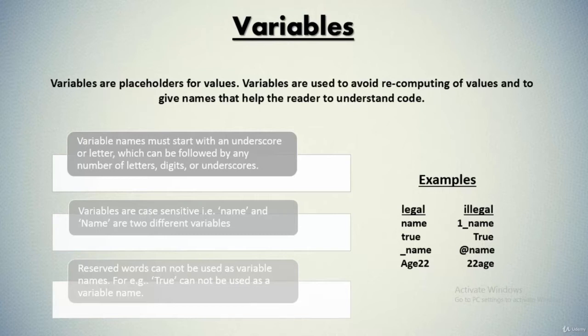Now based on the data type of a variable, the interpreter allocates memory and decides what can be stored in the reserved memory. Therefore, by assigning different data types to variables, you can store integers, decimals or characters in these variables.